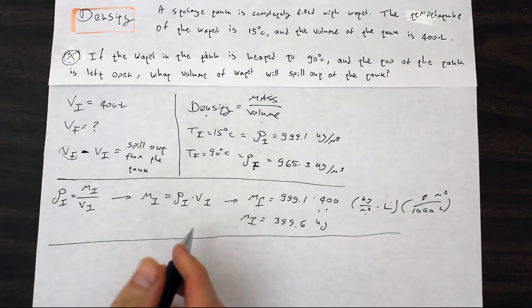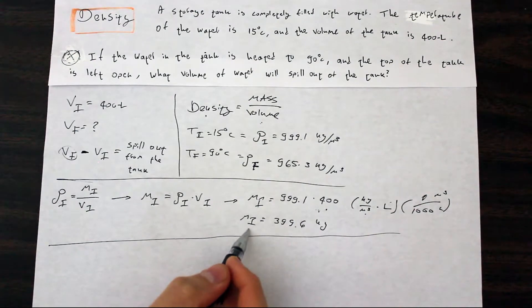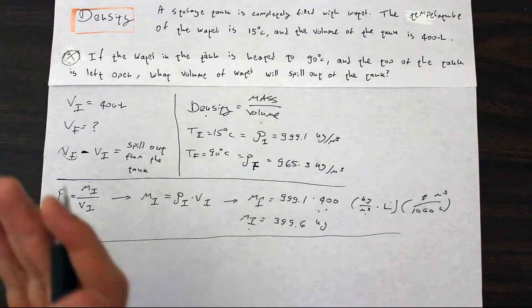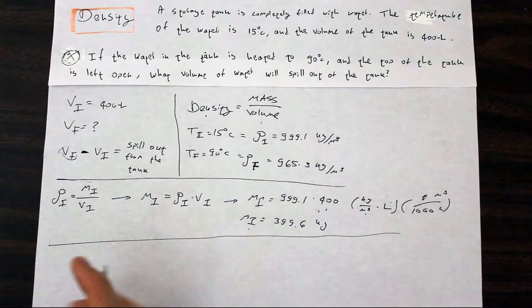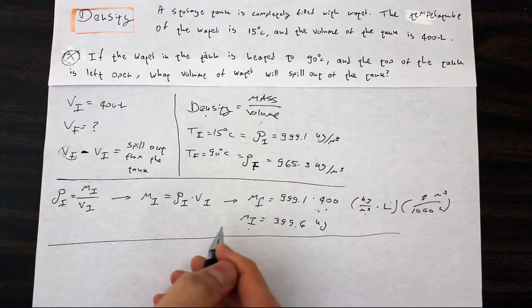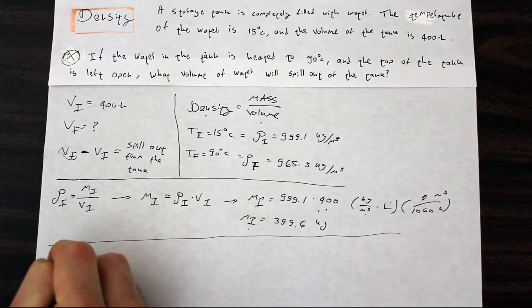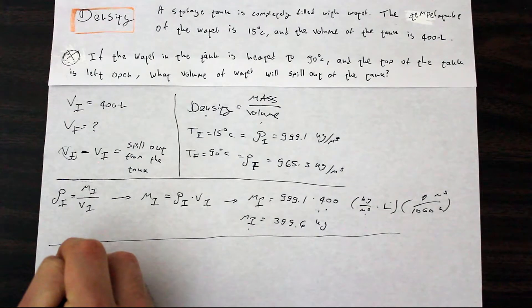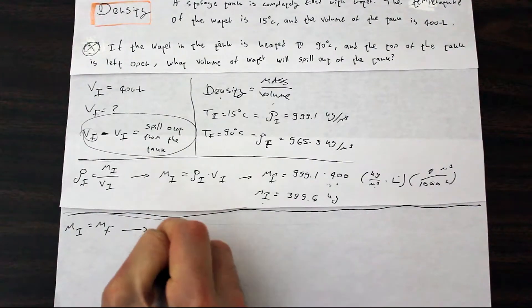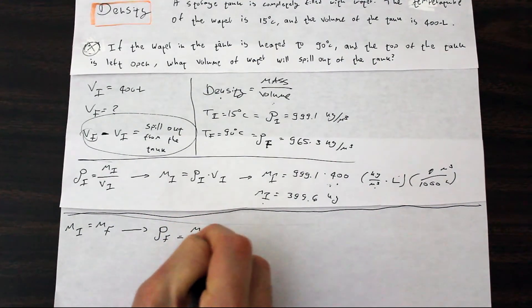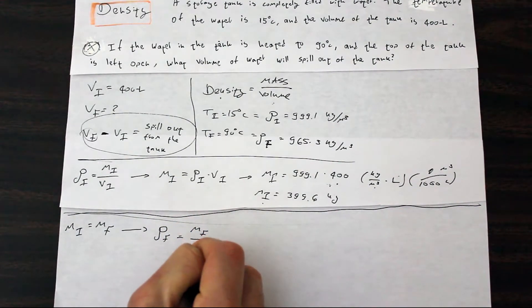Now, how can we use our initial mass into finding the final volume? The mass, as we know, stays constant throughout this process. So, we can say that M initial mass is equal to final mass. Final density is equal to the final mass over the final volume.